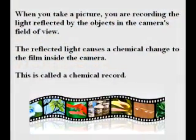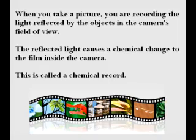When you take a picture, you're recording the light reflected by the objects in the camera's field of view. The reflected light causes a chemical change to the film inside the camera. This is called a chemical record.